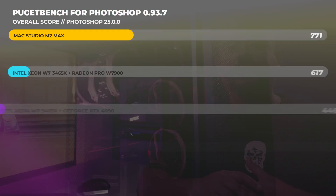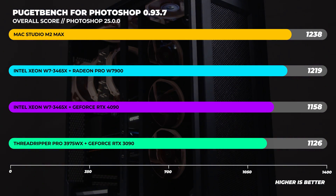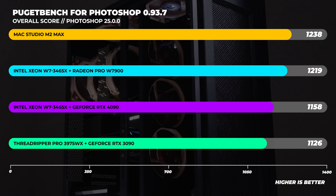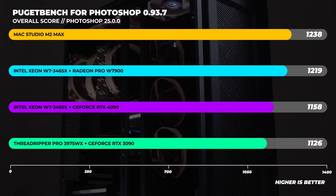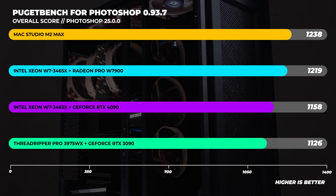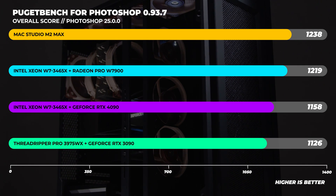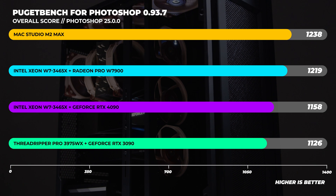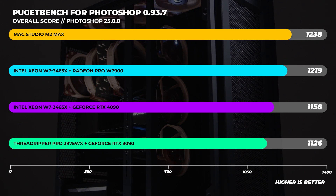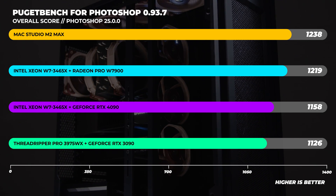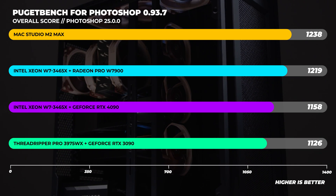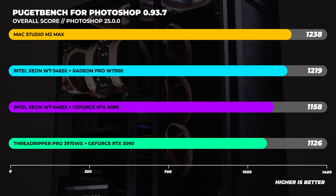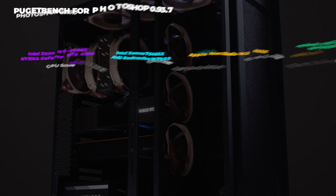Let's start off with Puget Bench for Photoshop. Looking at the overall scores, it's clear that the M2 Max Mac Studio is the fastest machine out of all four configurations — and honestly, this result surprised me. I was not expecting to see the Mac Studio come out on top. What's more interesting is the Xeon system with the Radeon Pro W7900 comes in second, and the gap between the same system with the RTX 4090 is considerable.